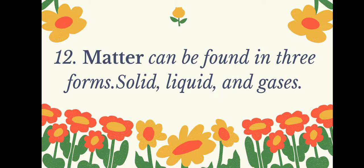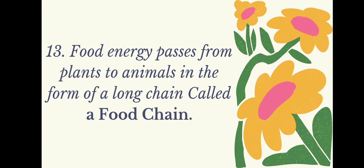Matter can be found in three forms: solid, liquid, and gas. Food energy passes from plants to animals in the form of a long chain called a food chain.